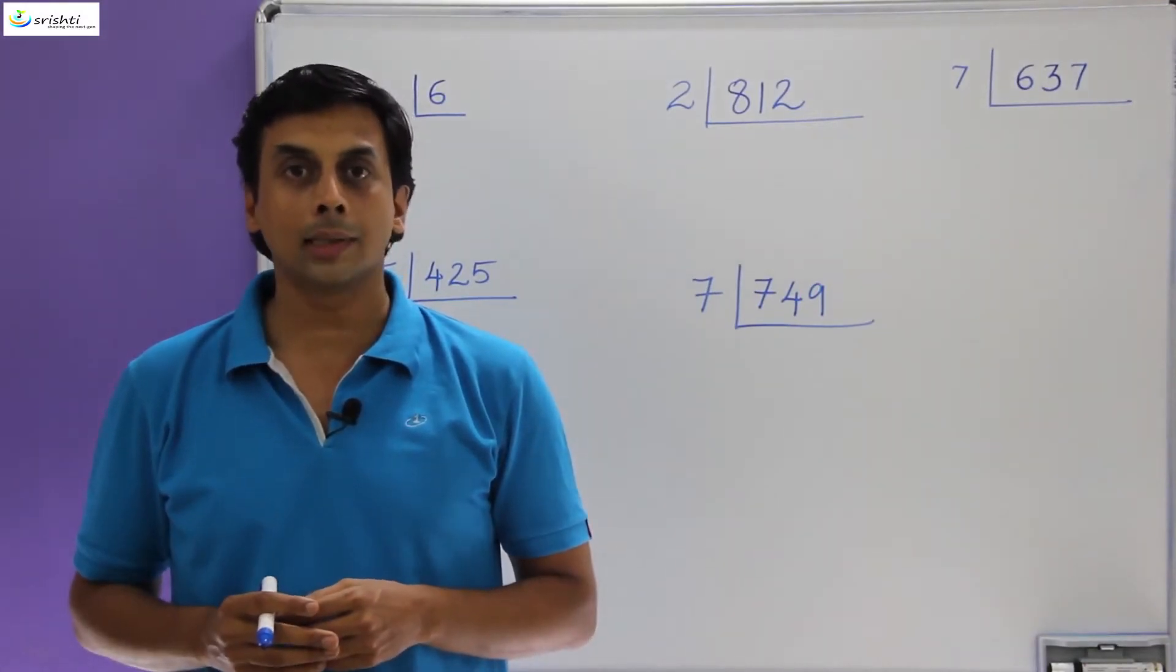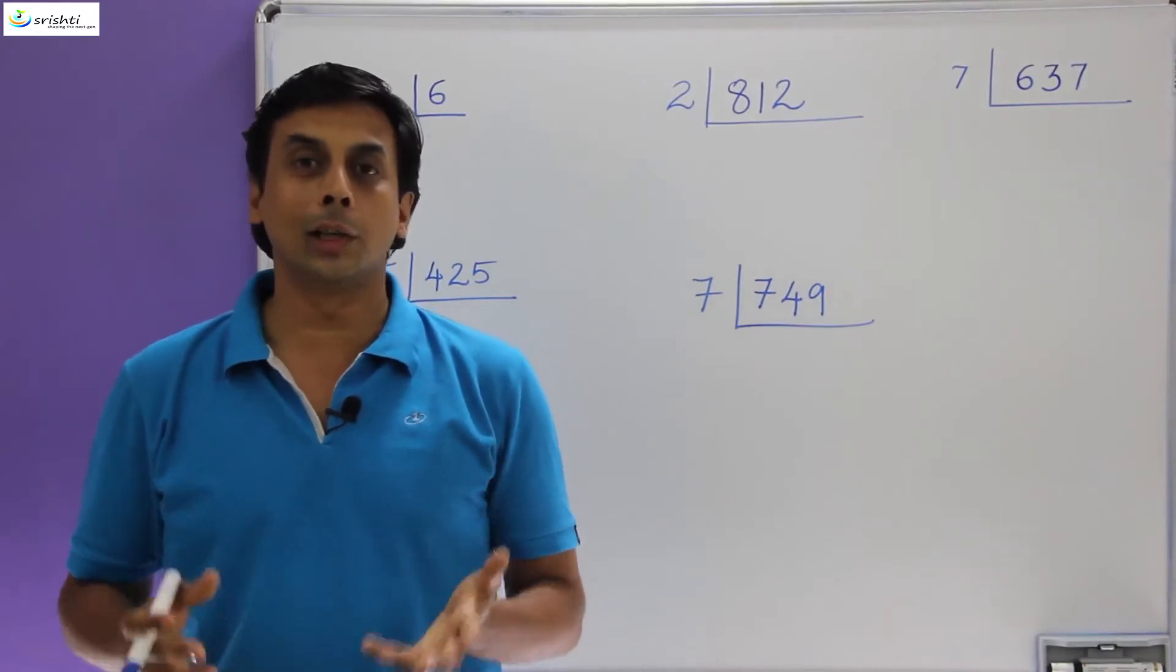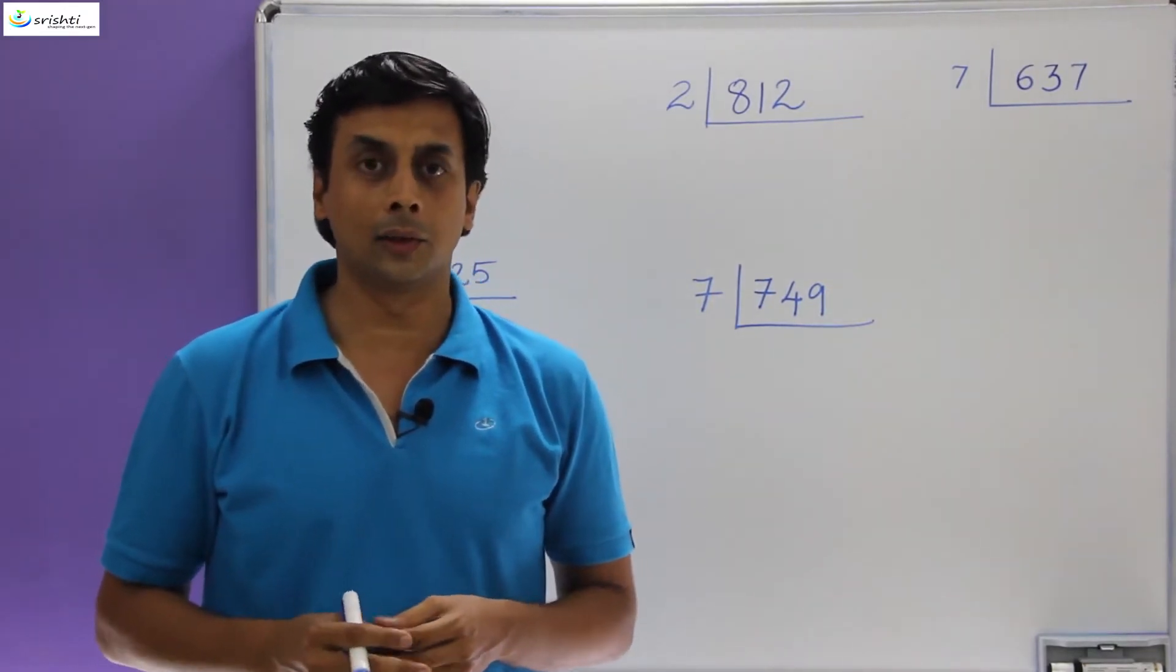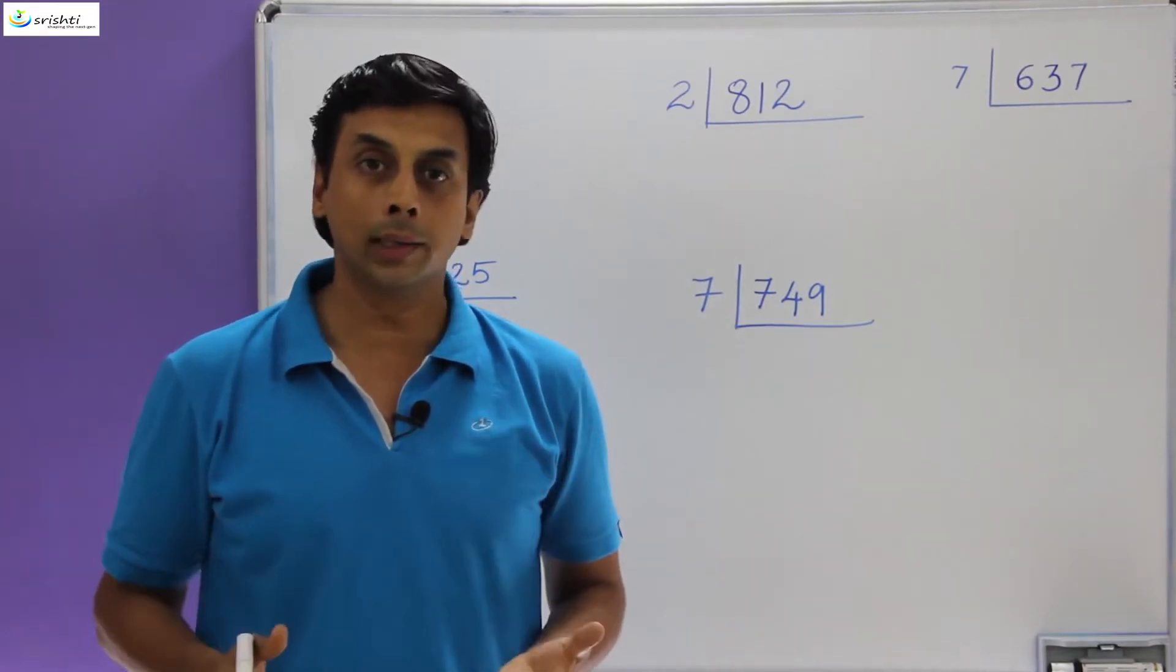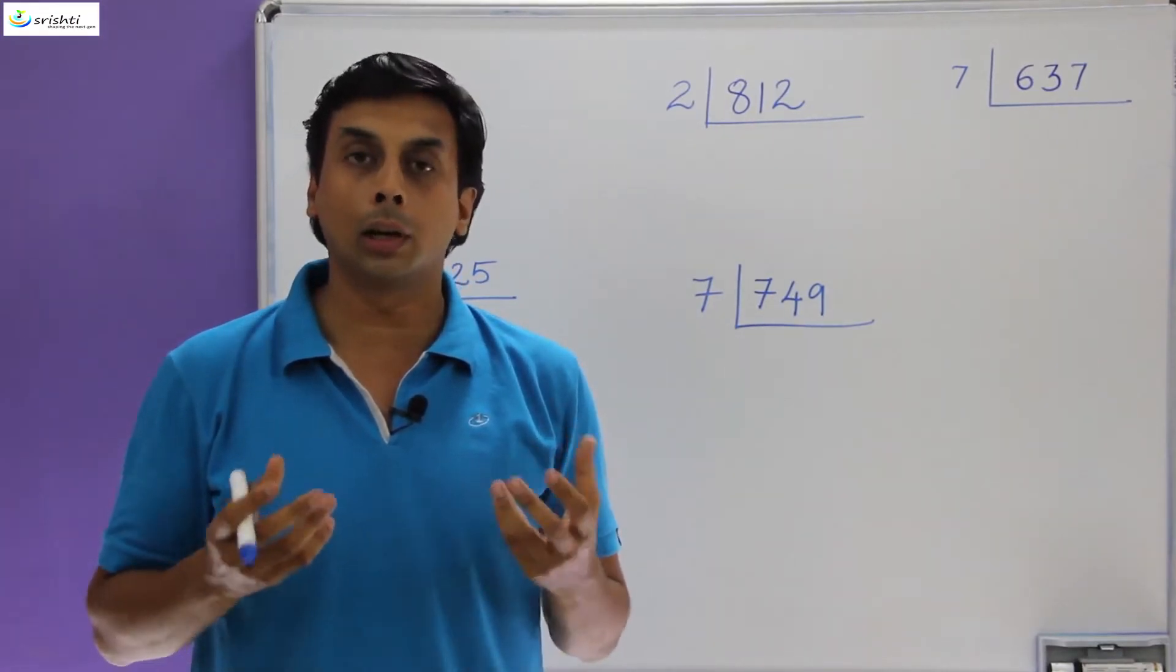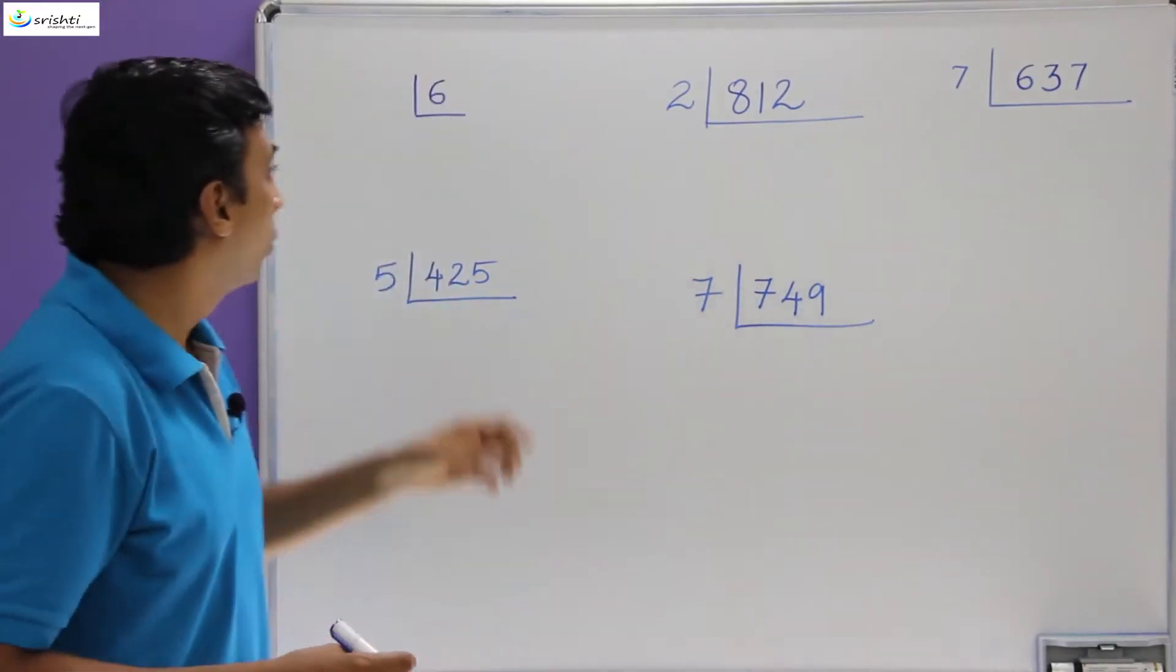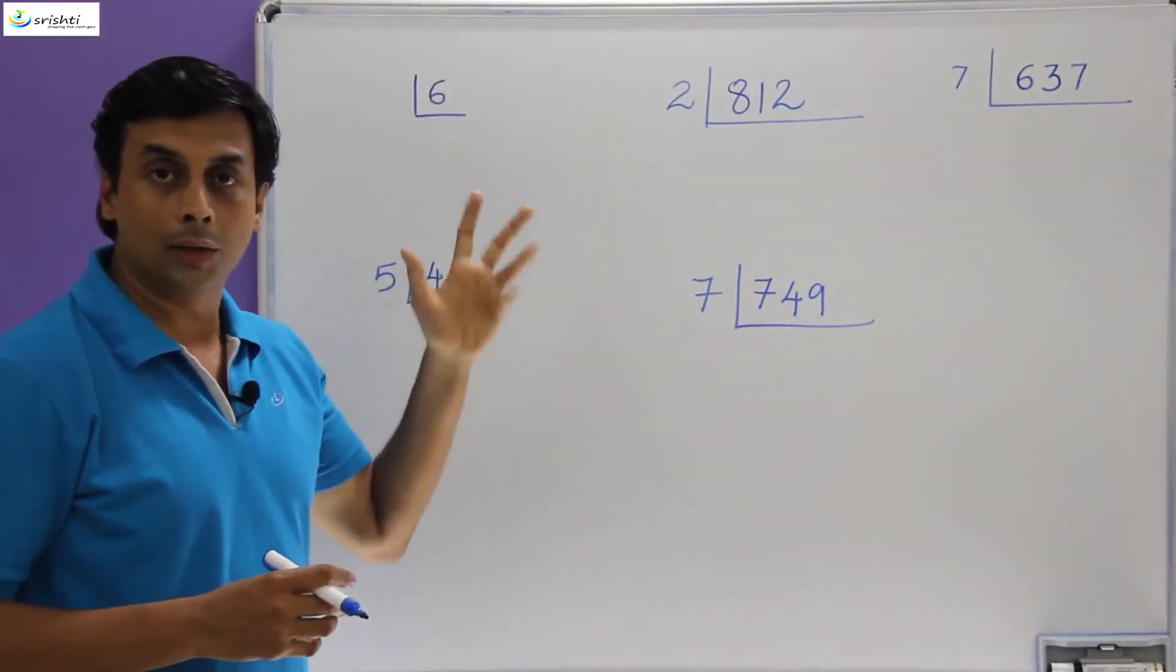Let's understand what this mistake is. While performing prime factorization, there is a very common mistake that happens, and this mistake is actually related to division. In prime factorization, what you're trying to do is you're trying to write a particular number as a product of its prime factors.